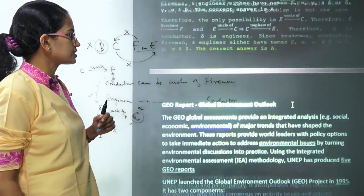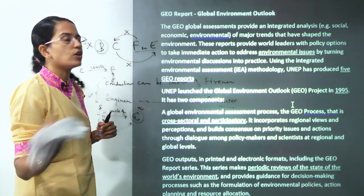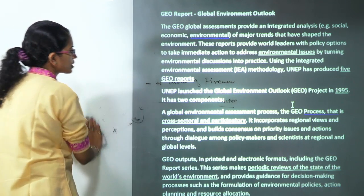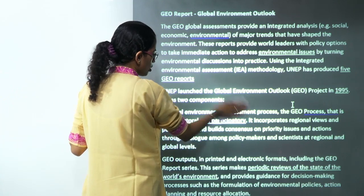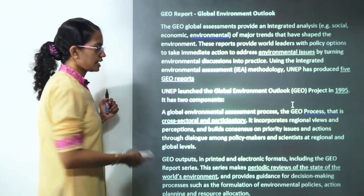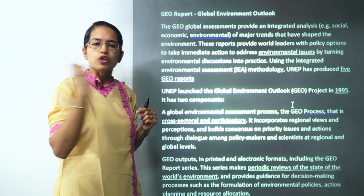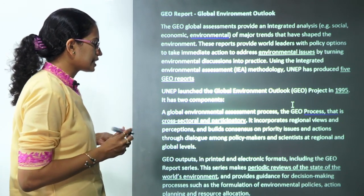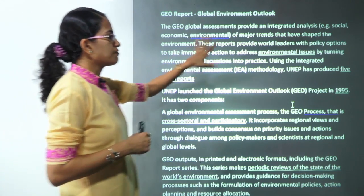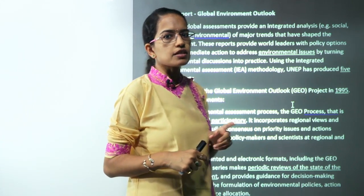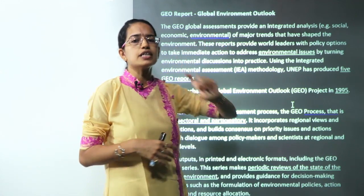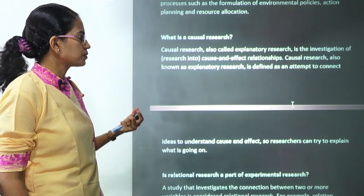That was a tricky question. The next question: what is the Global Environment Outlook Report? It is launched by the United Nations Environment Programme and was launched in 1995. It has two components: a cross-sectional and participatory approach, and a periodic review of the state of the environmental situation. So far, five reports have come out with regional assessment reports, and the sixth is on its way. There is no fixed duration between releases.